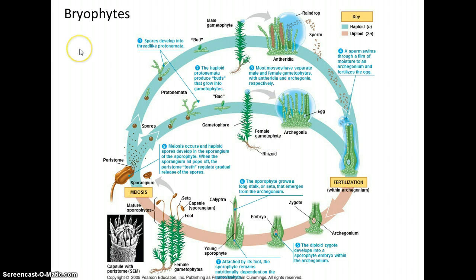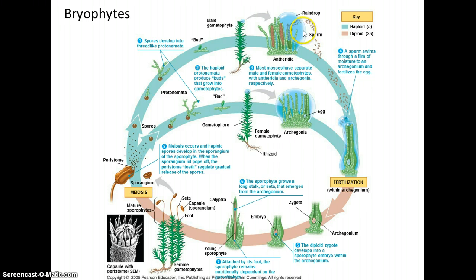The bryophytes — moss being an example — have the gametophyte stage as the largest dominant stage, which is multicellular haploid. They have separate male and female gametophytes. The males have a gametangia known as the antheridia that produces the male gametes, and the females have an archegonia that produces the eggs. They have flagellated sperm that rely on water to swim over to the female plant; rain can splash these sperm cells to the female parts. Once fertilization occurs, the sporophyte forms, and in mosses the sporophyte grows off of and is dependent on the gametophyte.